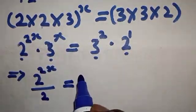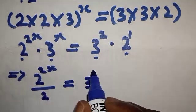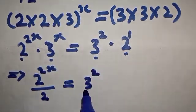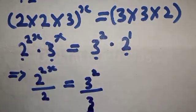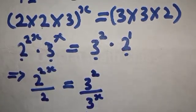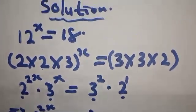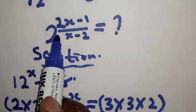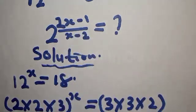Let's go to the right-hand side: this is 3 raised to power 2 divided by 3 raised to power x. Our focus is to get the value of 2 raised to power (2x minus 1) over (x minus 2), so that is our focus.